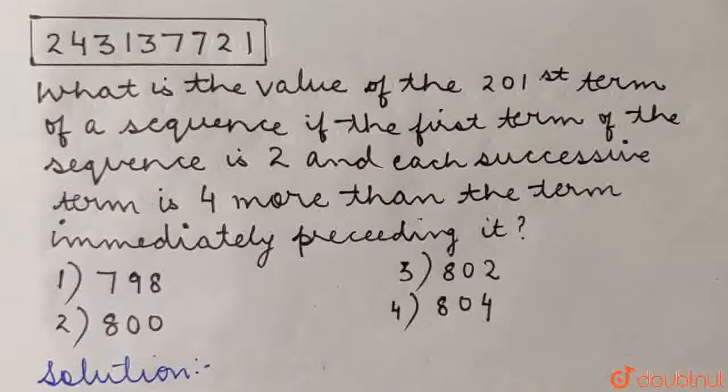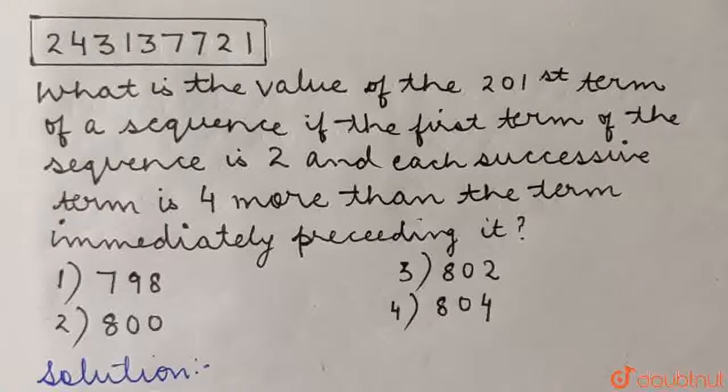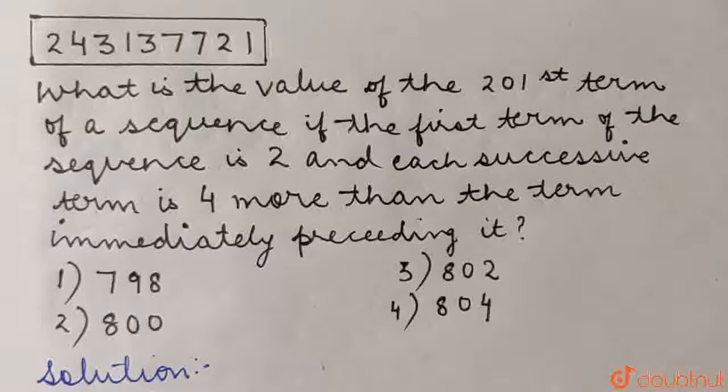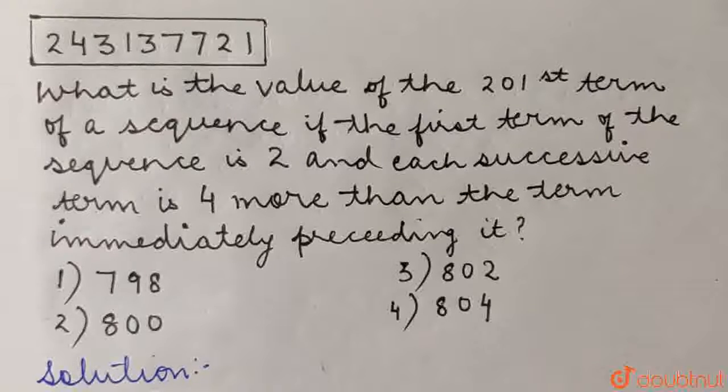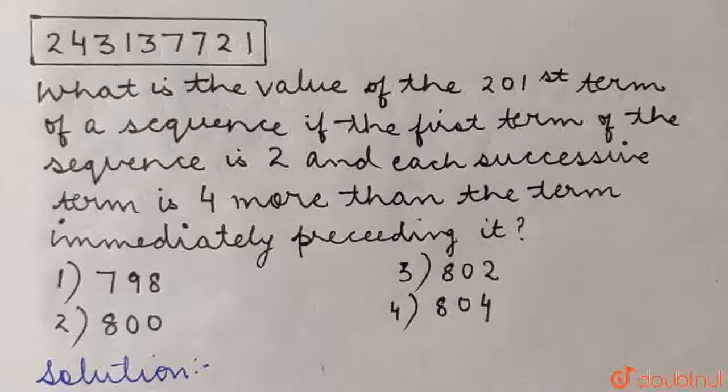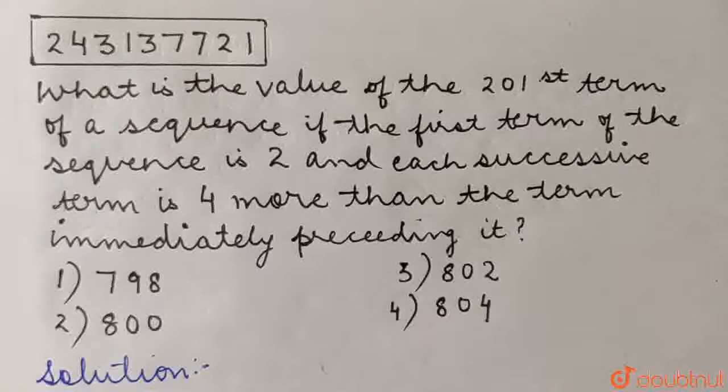What is the value of the 201st term of a sequence if the first term of the sequence is 2 and each successive term is 4 more than the term immediately preceding it? Option 1: 798. Option 2: 800. Option 3: 802. And option 4: 804.